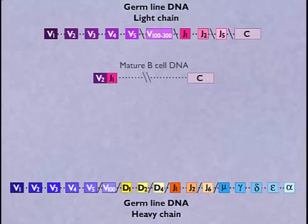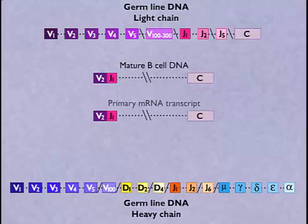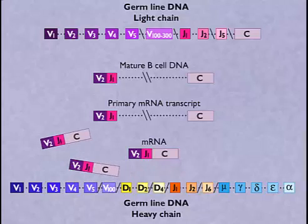The rearranged DNA in the mature B cell is transcribed into messenger RNA and translated into the light chains of the antibody.